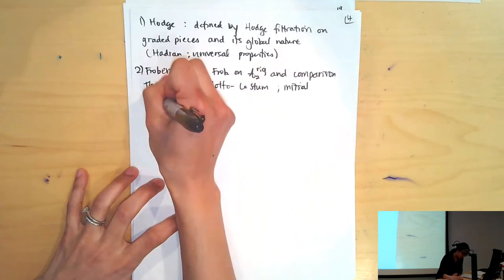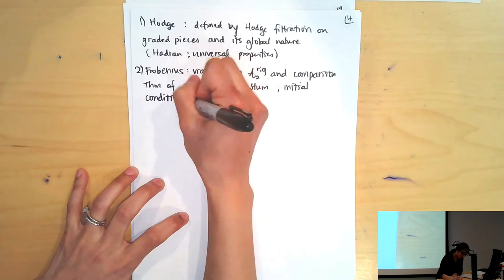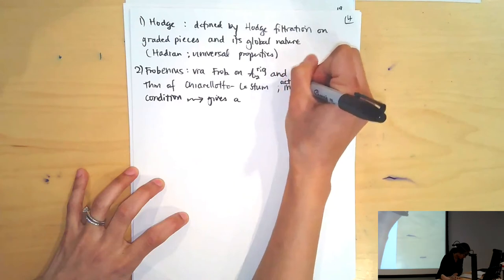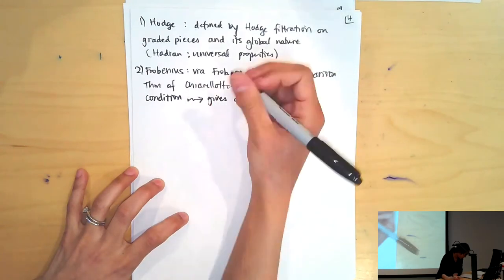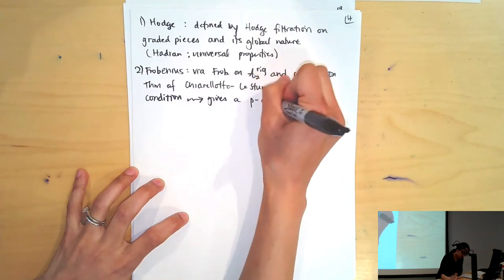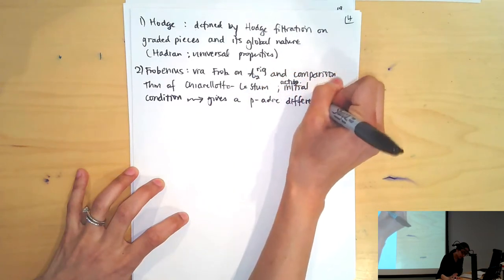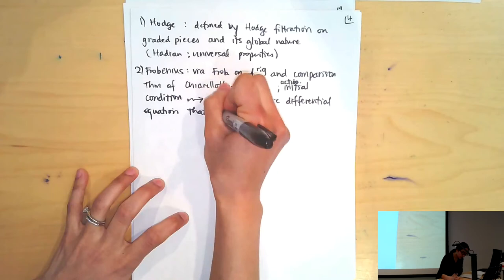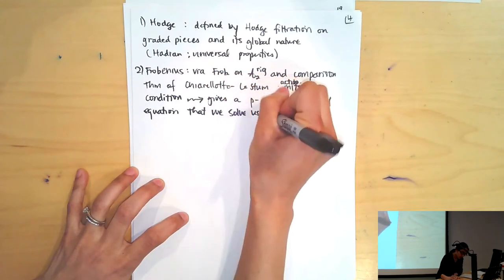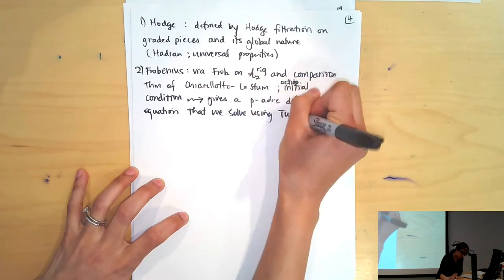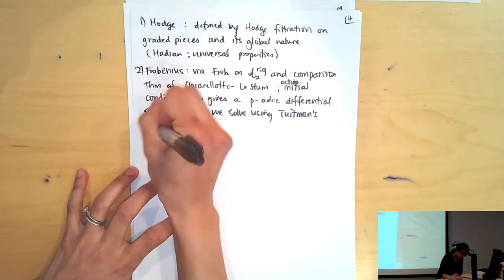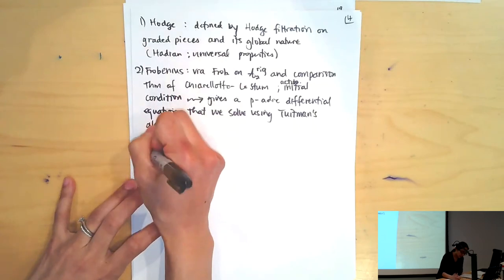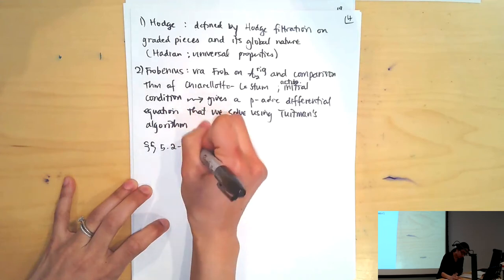There's an initial condition which is an action on a unit vector, and this gives the action on the unit vector and gives us a p-adic differential equation that we solve using Tuitman's algorithm. The details of each of these two pieces is in sections 5.2 and 5.3 in the notes.